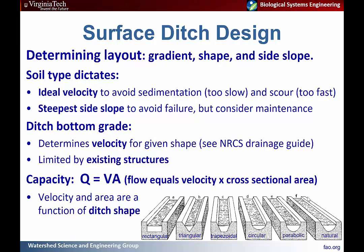The soil type also dictates the steepest side slope before you get failure and bank slumping, although generally much shallower slopes will be used to facilitate maintenance like bank mowing. The ditch bottom grade determines the velocity of flow for a given shape — equations for this are in the drainage guide. This grade is also limited by existing structures such as bridges or culverts. The capacity of the ditch equals velocity times cross-sectional area, and the ditch shape allows adjustment of velocity and flow capacity.